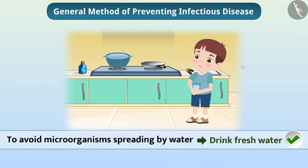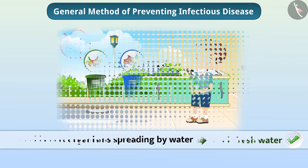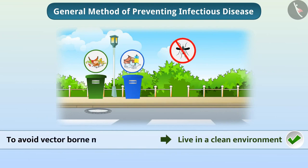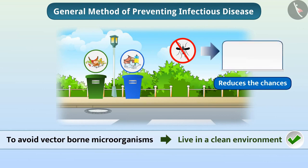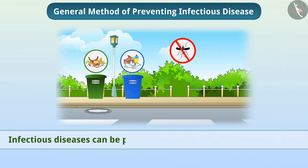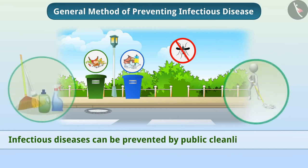Measures are taken to kill the microorganisms present in the water. One must live in a clean environment to avoid vector-borne microorganisms. For example, mosquitoes do not breed in a clean environment, which reduces the chances of getting diseases spread by mosquitoes. Therefore, hygiene is essential to prevent infectious diseases, and infectious diseases can be prevented by public cleanliness methods.